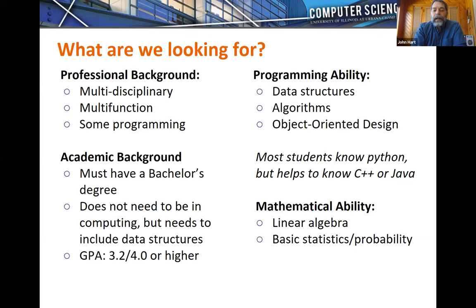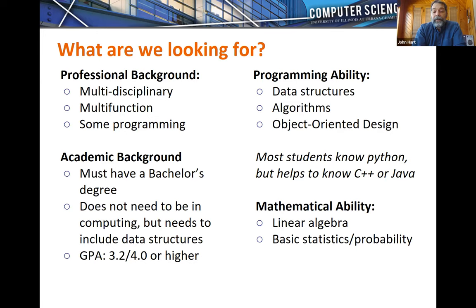We also need to see a GPA of 3.2 — that's our baseline GPA standard for admission to the Master of Computer Science program, both online and on campus. We hold all students to the same criteria. We do holistic admissions, meaning we look at everything in the package: your entire GPA, your GPA for the last two years of your degree, your GPA for subsequent classes taken after your degree, and your GPA for computing classes.